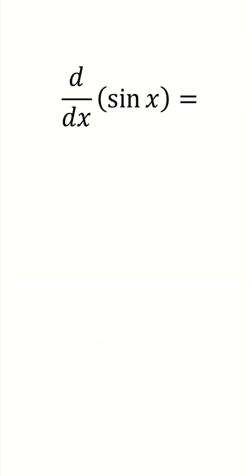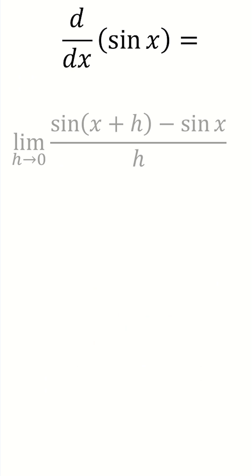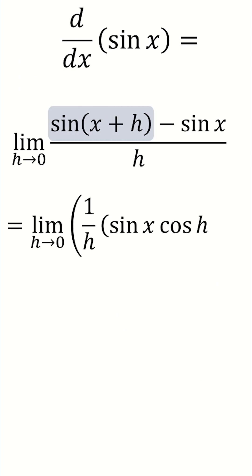So as usual, with differentiation by first principles, you start by doing the limit as h tends towards zero of the function with x plus h plugged in, minus that same function, all divided by h. And so then we can use a trig identity to replace this with sine of x